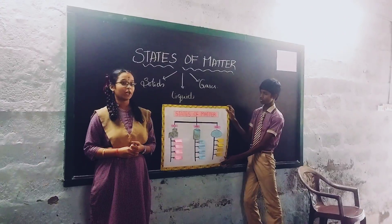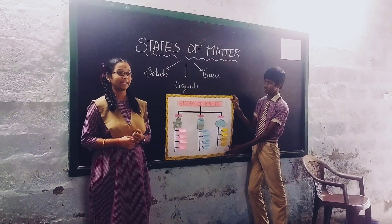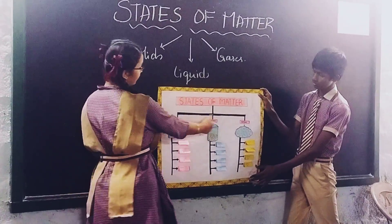Anything in this world that occupies space and has mass is called matter. Matter exists in three states: solids, liquids, and gases.